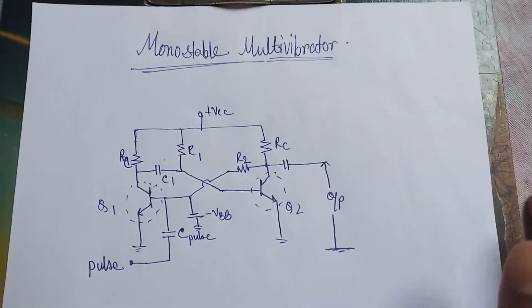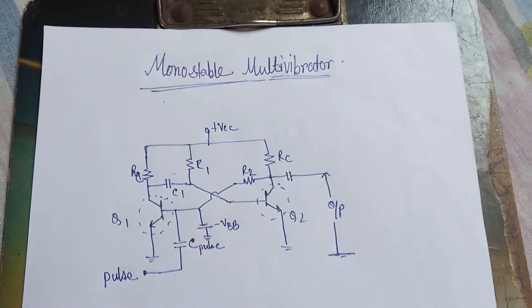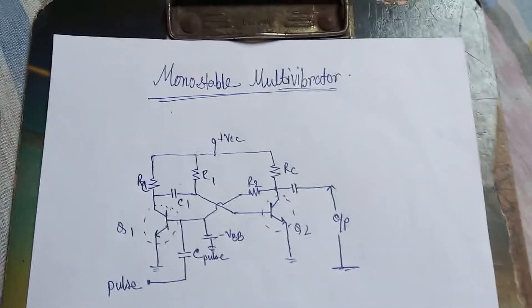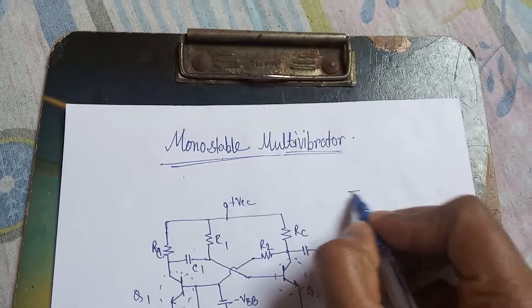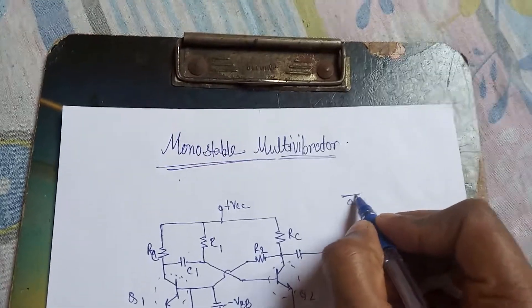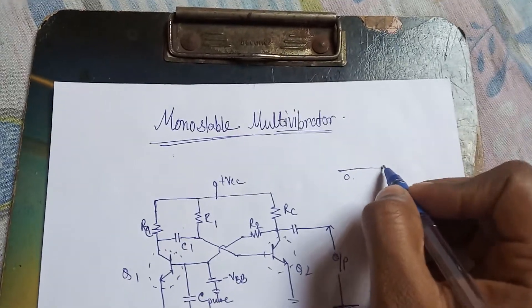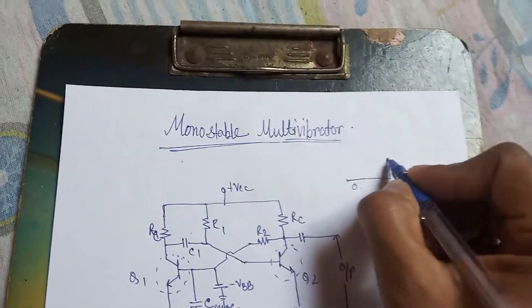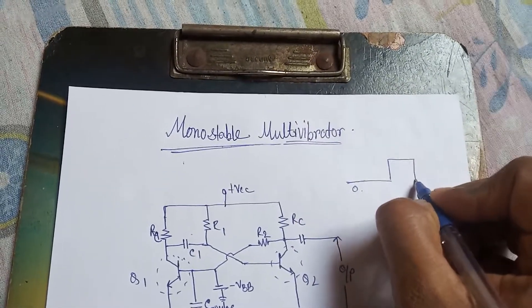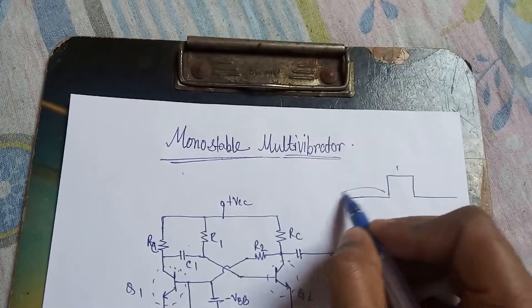Now we learn about monostable multivibrator. Previously we learned about astable multivibrator. Monostable means one state is stable. If we assume zero state is stable, it always stays at zero — never going to be one. When will it be one? When we apply a trigger or some external force, then it goes to one, and after some time duration it will again be zero.